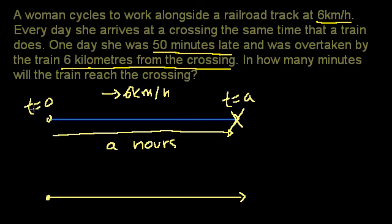If this was time equals 0, that's when she normally leaves. She's now leaving at time equals 50 minutes, or 5/6 hours. 50 minutes is just 50 over 60 hours, or 5/6 hours. So time equals 5/6 hours.